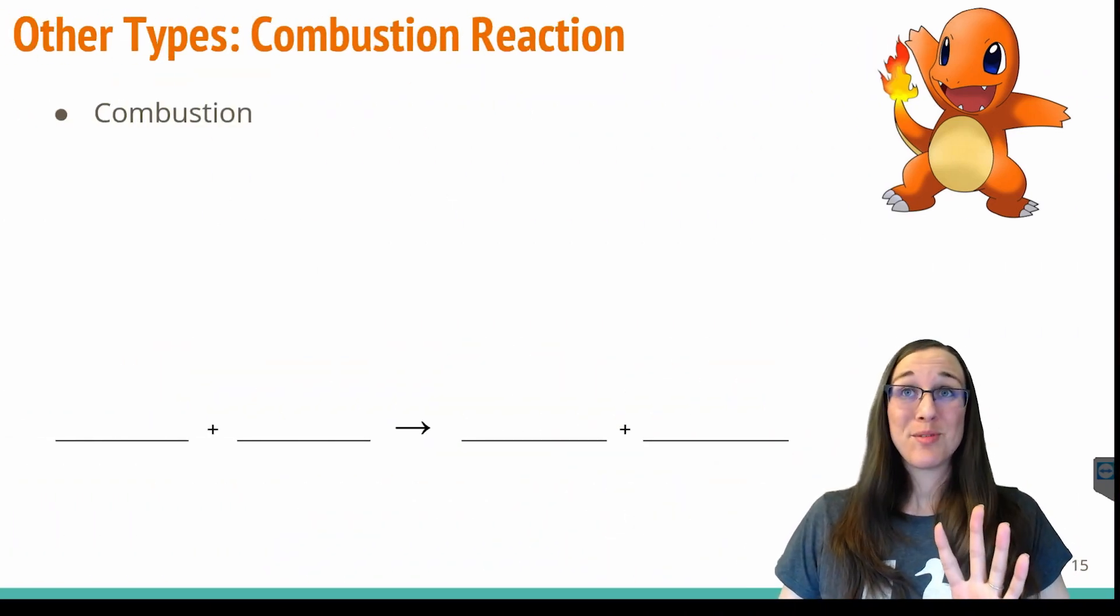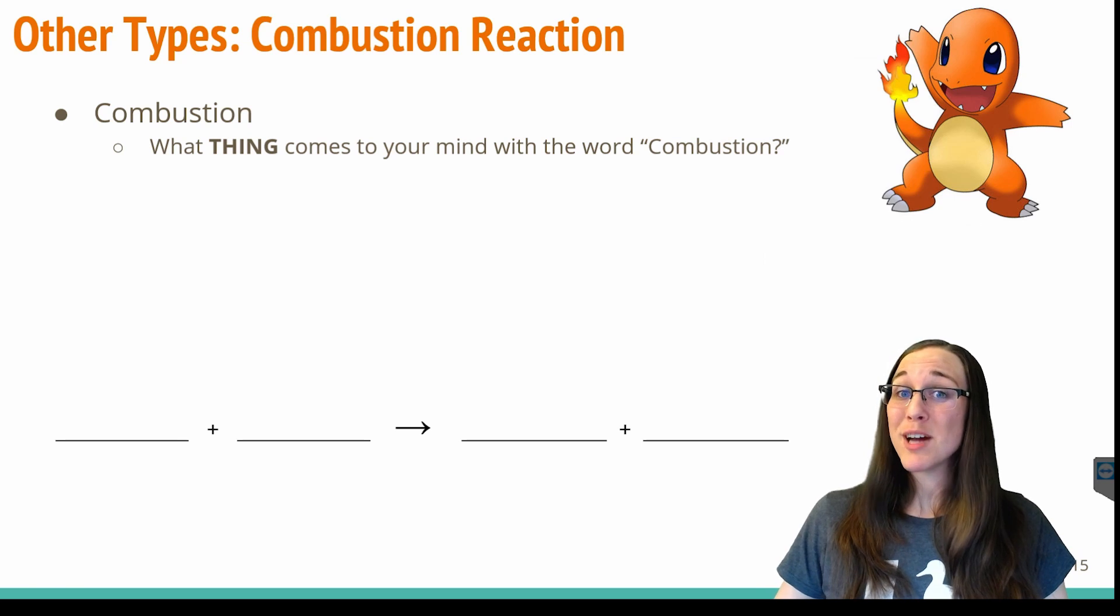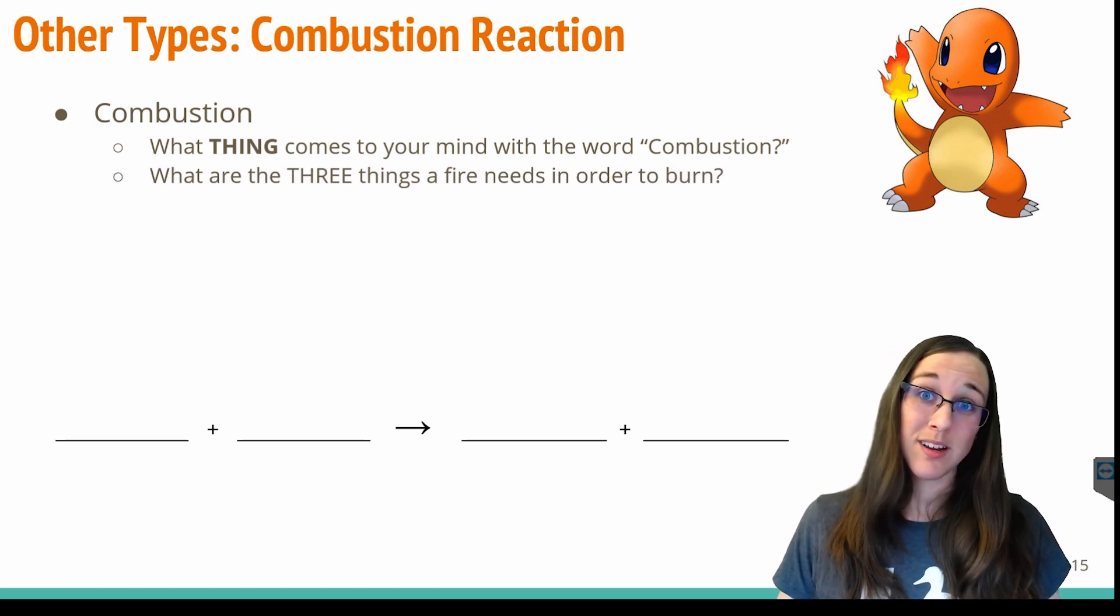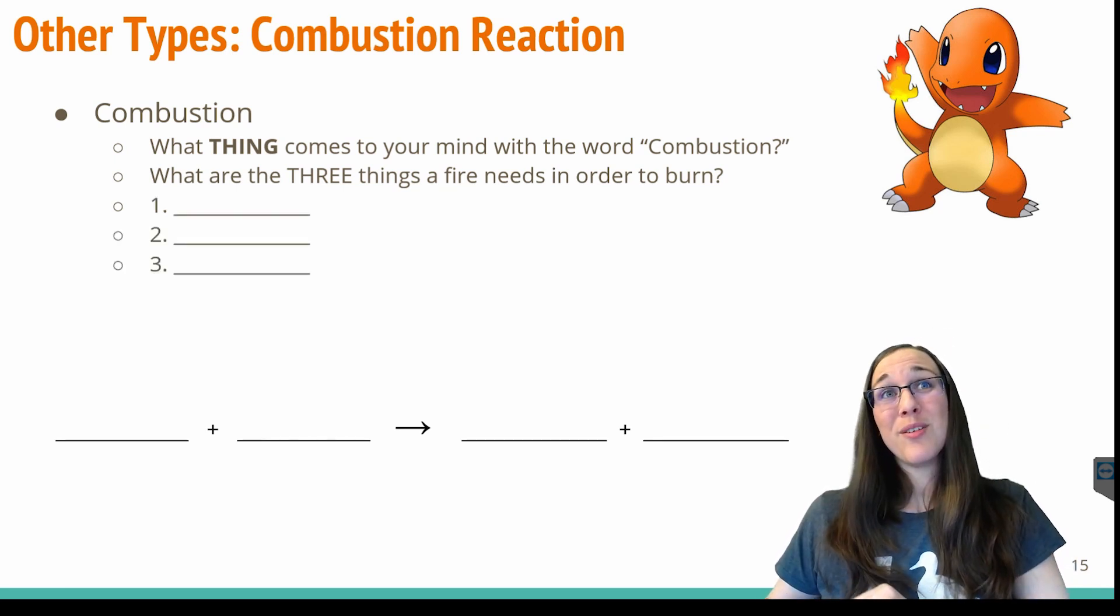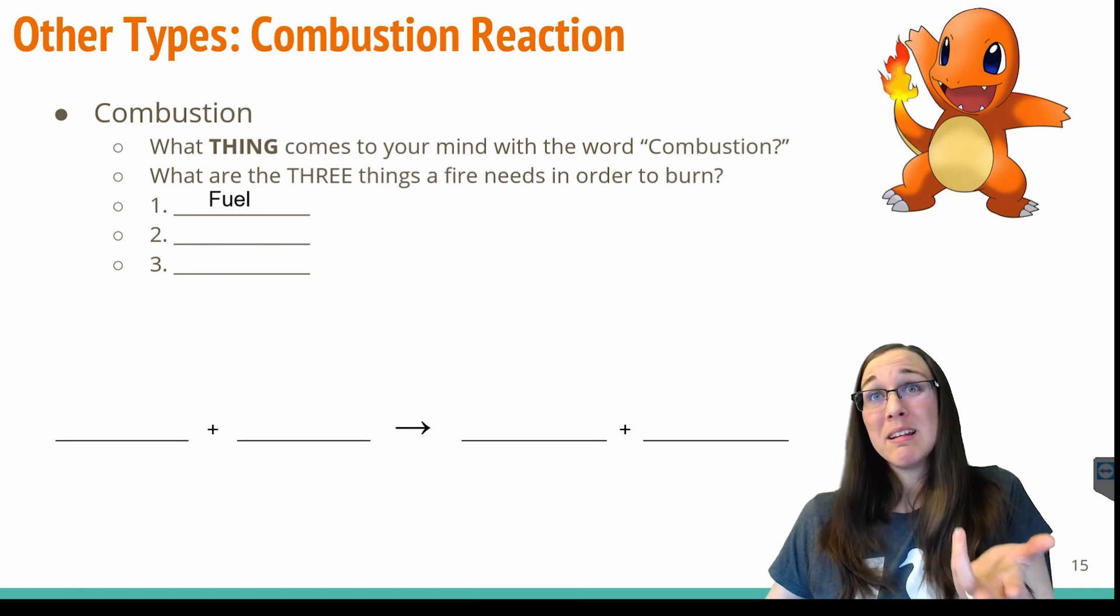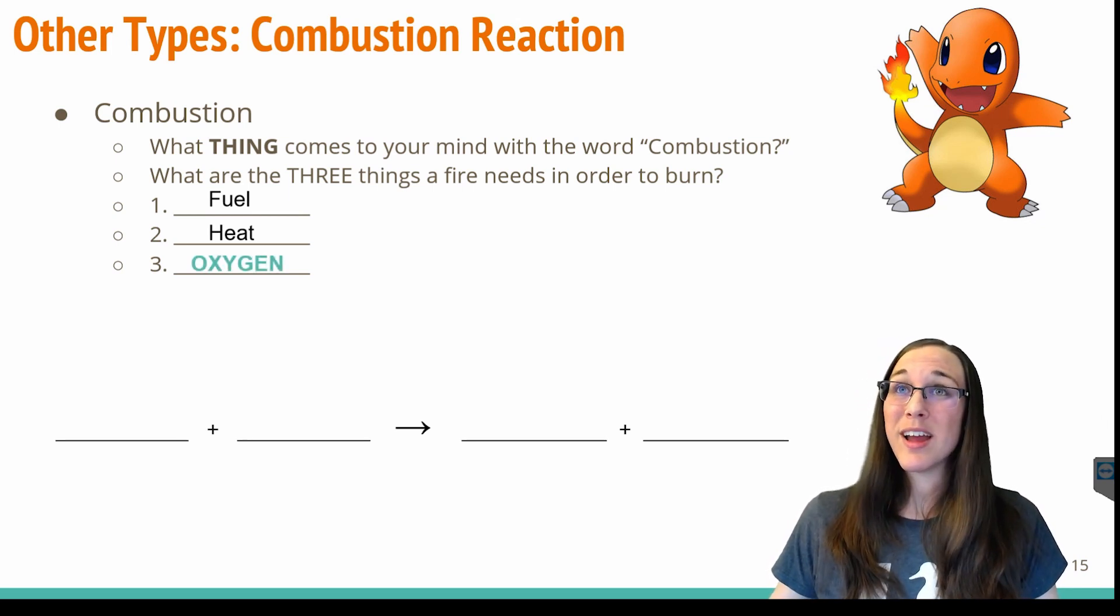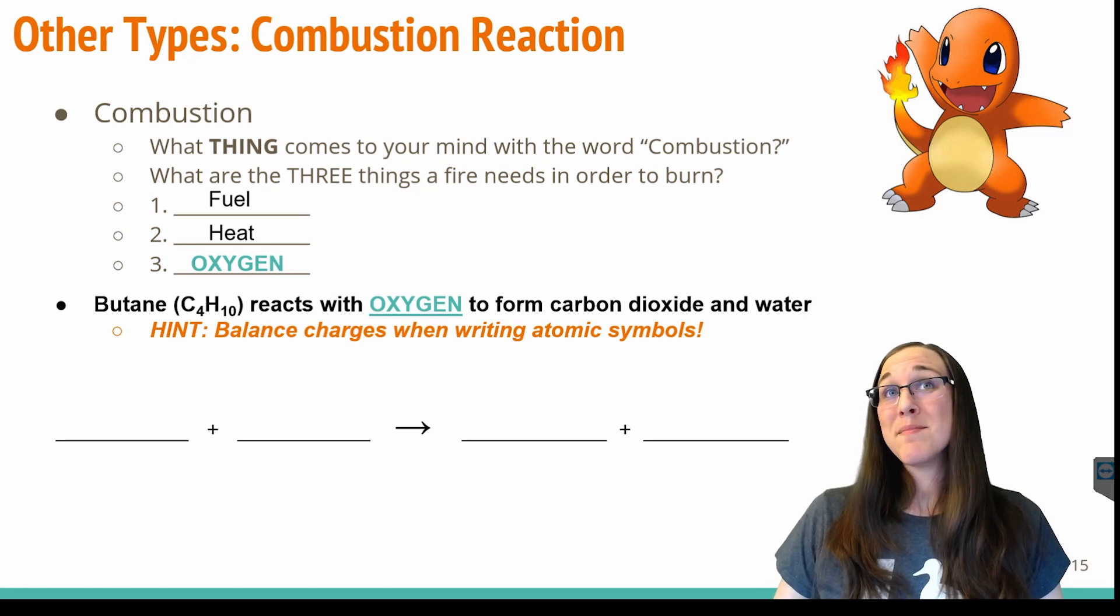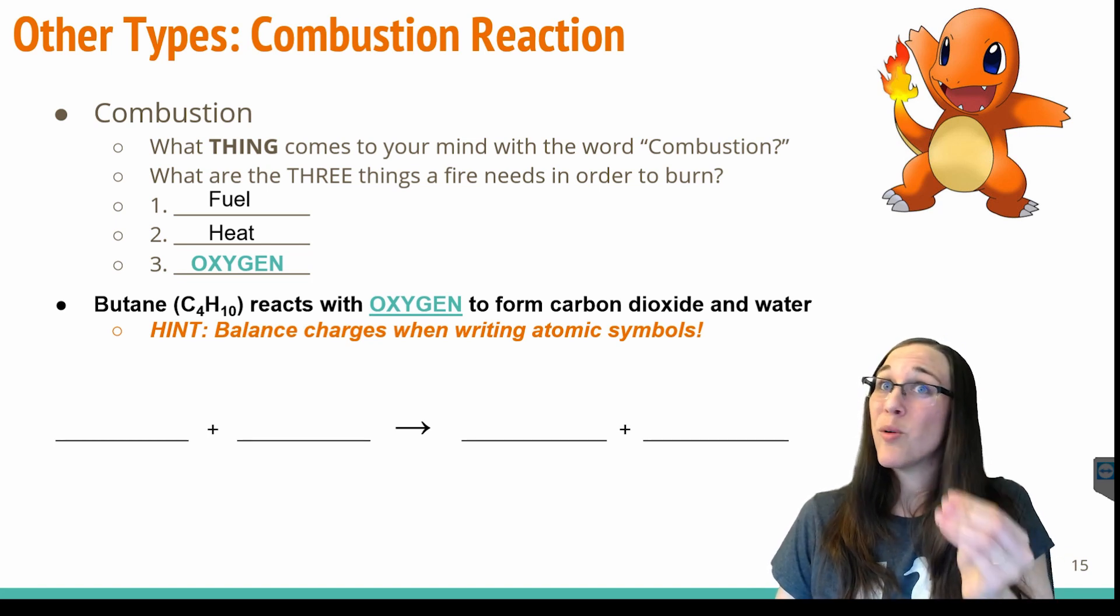So those are the four main chemical reactions you should be familiar with, but here's a few more. We also have a combustion reaction. So hopefully the thing that comes to your mind when you think of combustion is fire. So like Charmander, what three things does a fire need in order for it to burn? So come on all you girl scouts and boy scouts out there. What are three things that a fire needs to burn? Hopefully you know the first thing a fire needs is fuel. It needs some kind of fuel type, wood, grass, newspaper, propane. It needs fuel. It also needs heat. It needs a heat source in order for it to burn. And it needs oxygen. It needs air. That's why if you put like a pot or a pan or something over a candle, the flame goes away. It needs oxygen to burn.